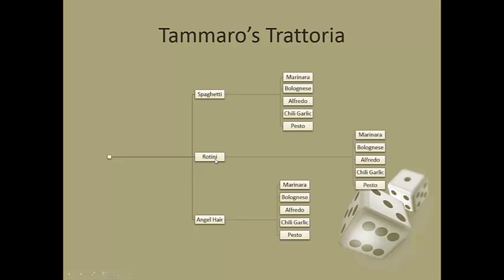So for the first one here I have Tammaro's Trattoria. I could have spaghetti, rotini, or angel hair for my first choice. Now there's no reason why I have to choose my pasta shape first. It came first in the problem which is why I chose to organize it this way. But I could have listed my sauce first and then for marinara had three possible second choices for my pasta. For pesto I could have had spaghetti, rotini, or angel hair. So I could organize it the other way and I get the same result.